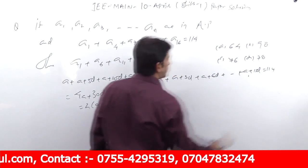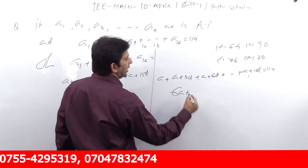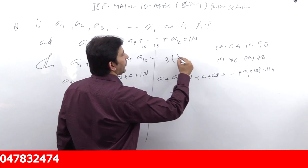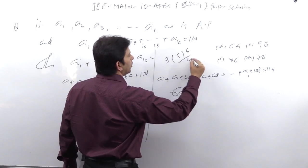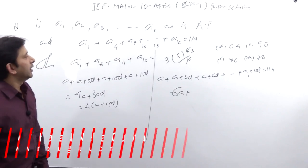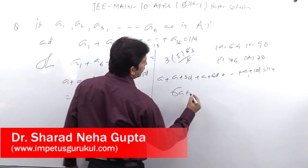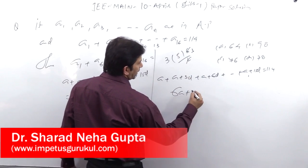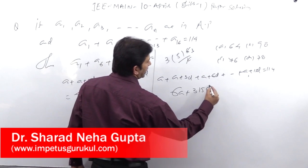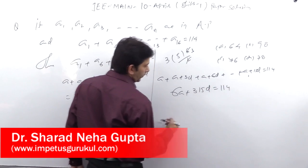This is 114, so six times of A three common, then five term is 5 into 5 plus 1 by 2 means 3, 9D right. Now as the same 2A plus 45D is equal to 114, 3 into 15D, this is equal to 114.